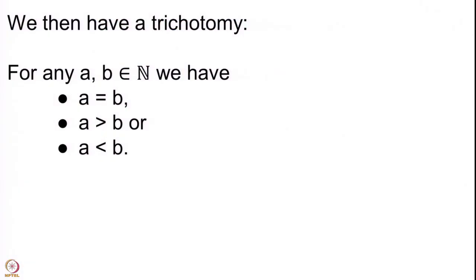Trichotomy says: given any two natural numbers a and b, you will either have that a equals b, a is bigger than b, or a is smaller than b — and these three types of relations exhaust all pairs of natural numbers. You may think this is obvious, and indeed it follows from what we have developed so far.